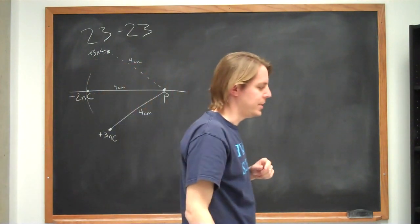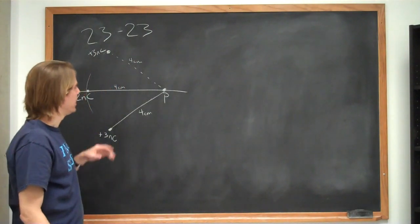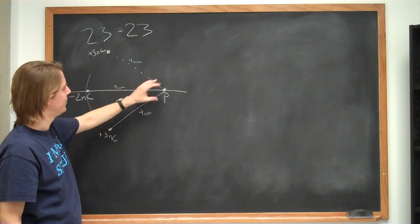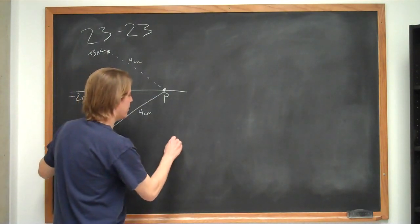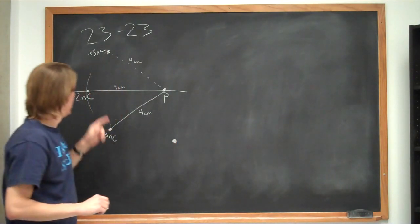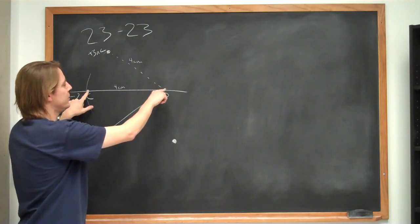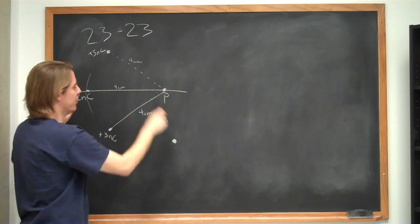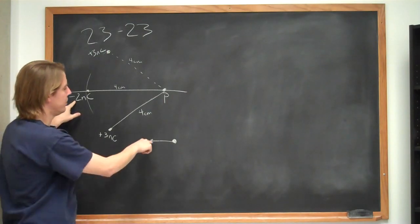So the question is what is the field at point P? So this is a problem we can simplify a little bit by thinking for a minute before we start doing calculations, thinking about the vectors of the fields formed at point P. So if we zoom in here just on point P, we know the field that we're going to get from the minus 2 nanocoulombs is what a positive test charge would do at point P. It would go that way.